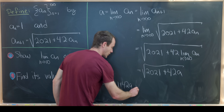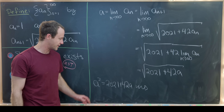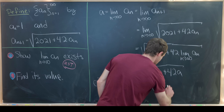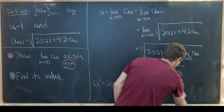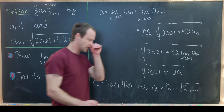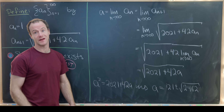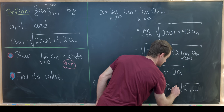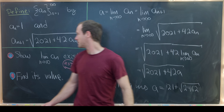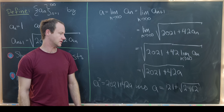We now have a quadratic equation in a. Using the quadratic formula — since it doesn't factor easily — we get a equals 21 plus or minus the square root of 2462. Those are the two possible values for the limit. Only the one with the plus sign makes sense, because the minus would give a negative limit, but all terms of the sequence are clearly positive.